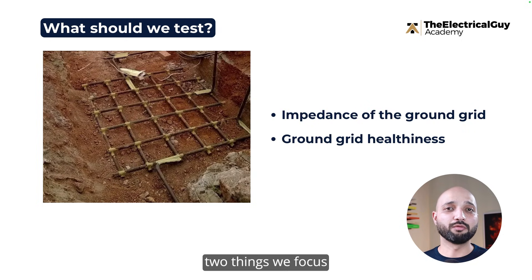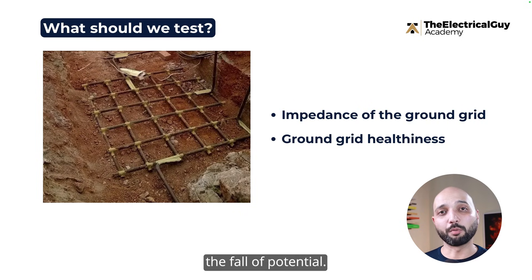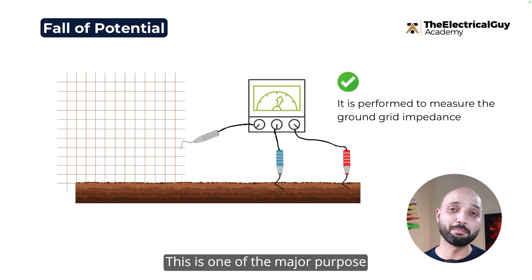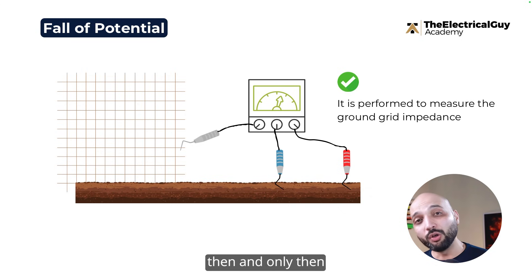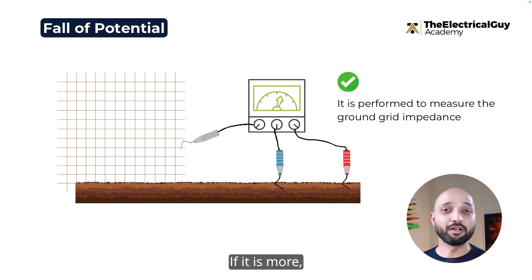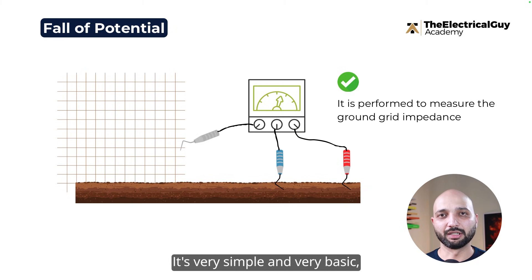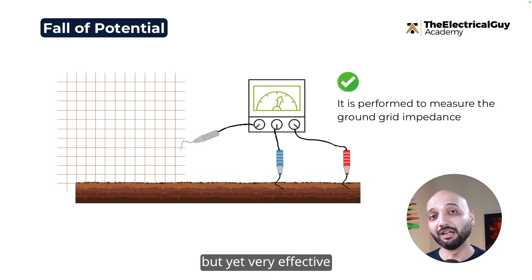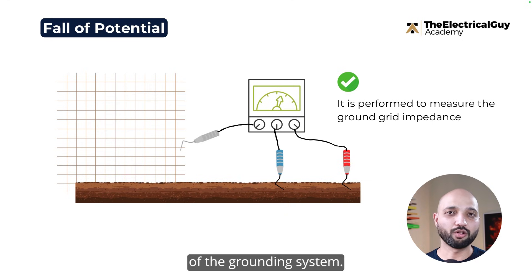The testing methods we'll see basically focus on these two things. We are testing the grounding system to ensure its impedance is low, because only then will the fault current pass through it. And second, we need to make sure the grid is healthy — that there are no broken points, loose connections, or corrosion. Fall of potential is used to test the impedance. It's a simple but very effective method used worldwide, and when the impedance is low, that means the system is healthy.